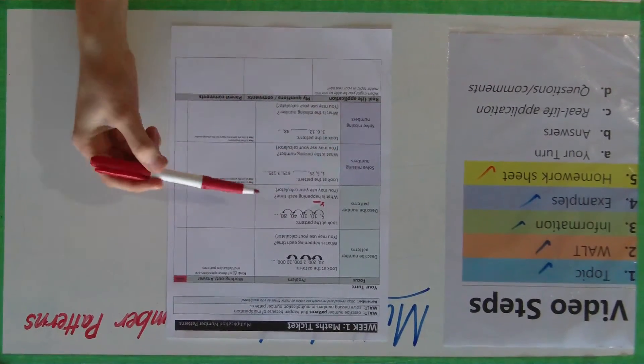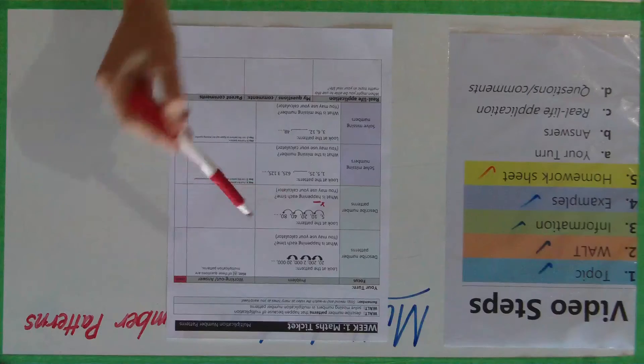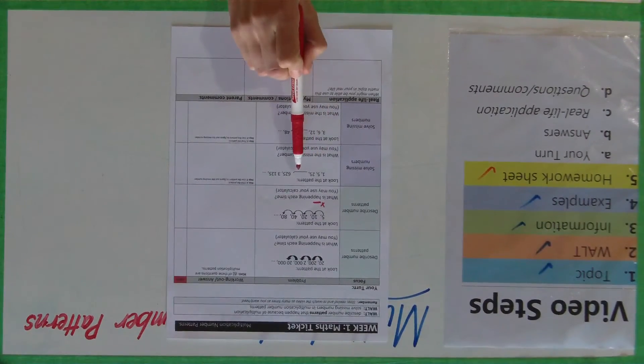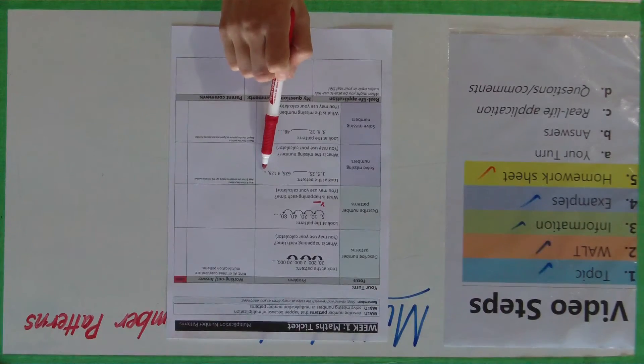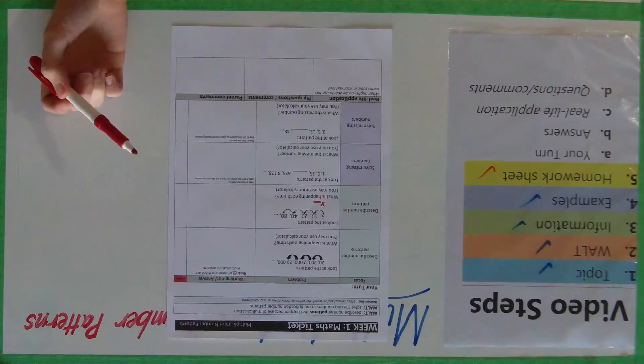And next one, solve missing numbers. So what is the missing number in this pattern here? 1, 5, 25, something, 625, 3125, and so on. Remember you can use your calculators on these questions.